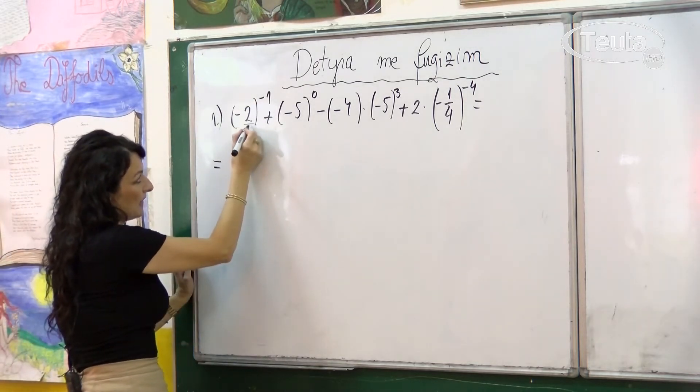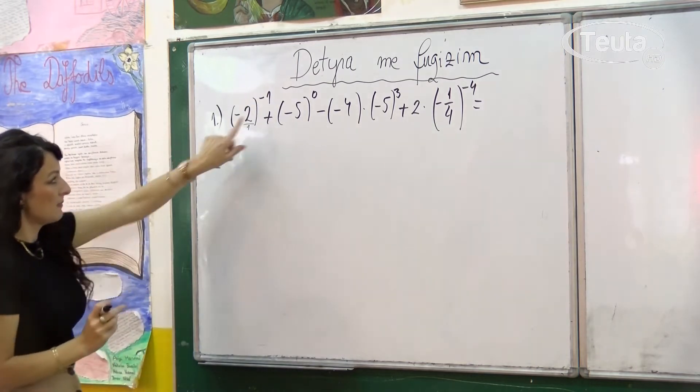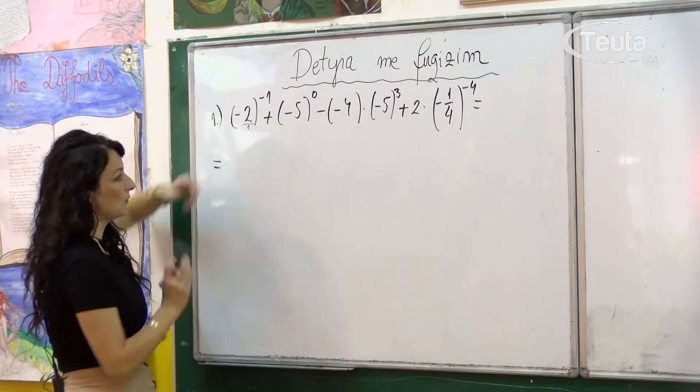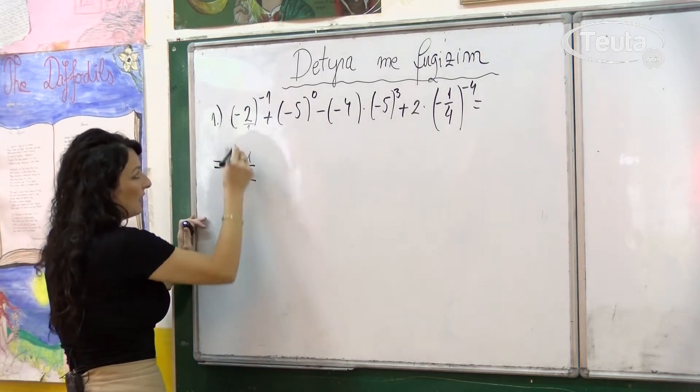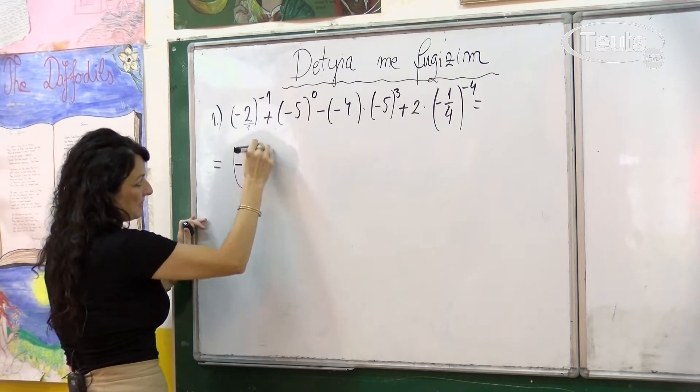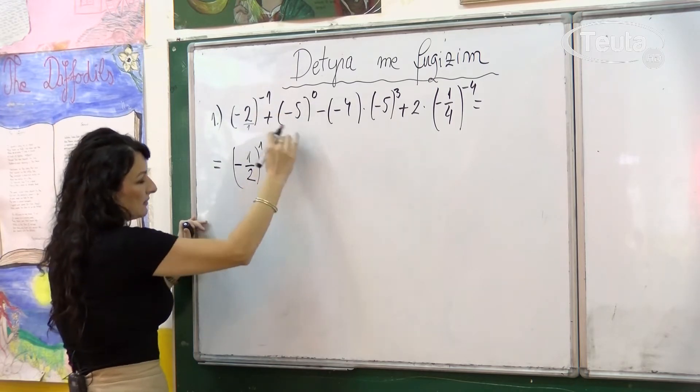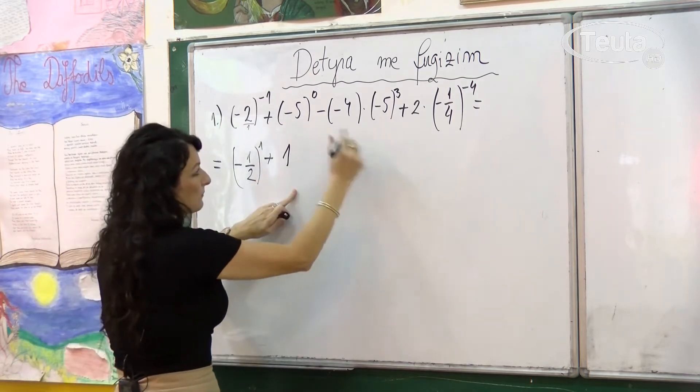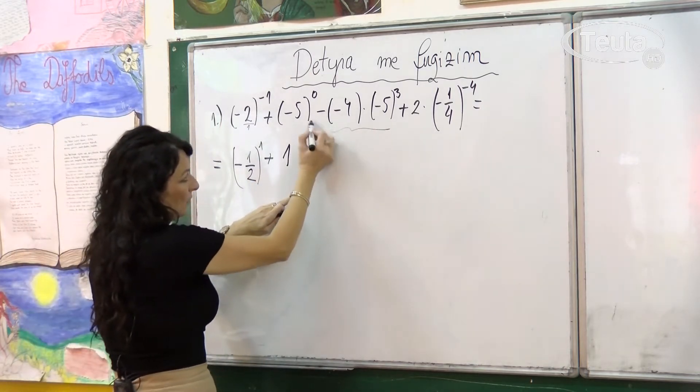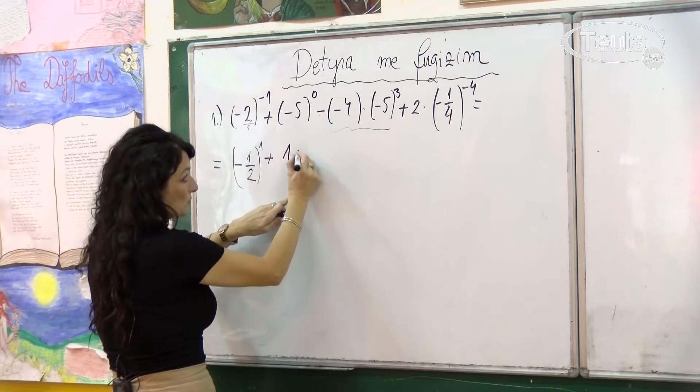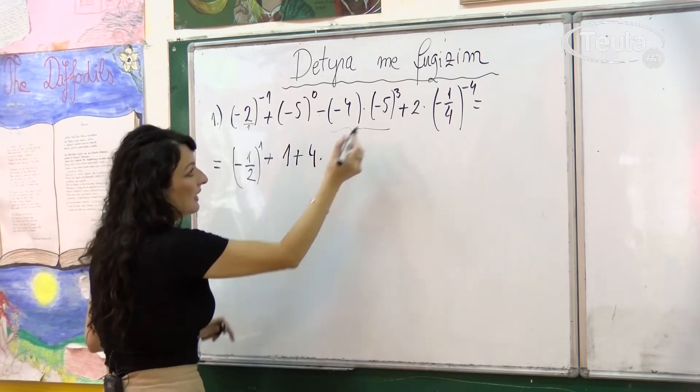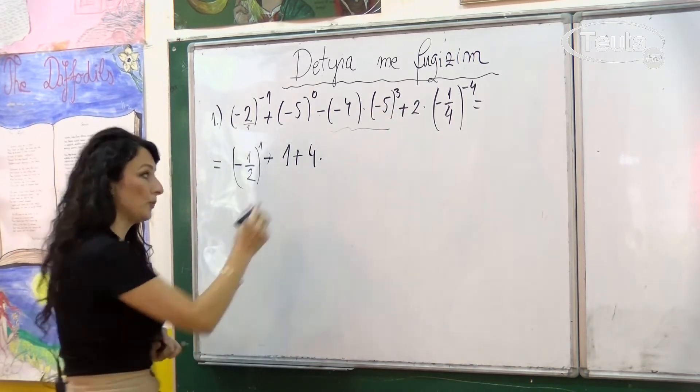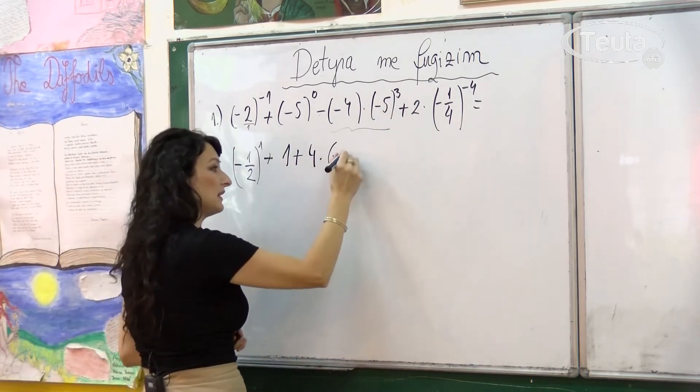Atëherë, këtu kemi fuqinë minus 1. Në orën e kaluar kemi thënë se kur kemi një thyesë dhe kemi eksponent negativ, marrim vlerën reciproke. Numërin e plotë e shkruajmë si 2 për 1 dhe këtu kemi minus 1 e 2 ta dhe kjo shëndrohet në fuqinë 1. Plus, çdo numër i fuqizuar me 0 është gjithmonë barabar me 1. Këtu kemi shumëzimin, dhe po ashtu kemi shenjë bazë që minusi, i shumëzojmë kemi 4 herë dhe këtu kemi minus 5 në fuqinë e tretë. Minusi përshkon sepse eksponenti është numër tek, kurse 5 në fuqinë e tretë është 125.